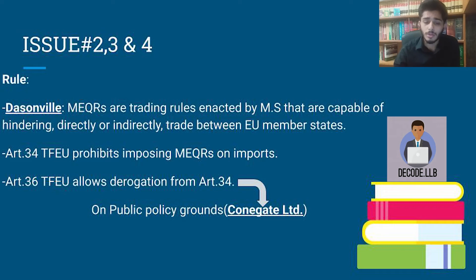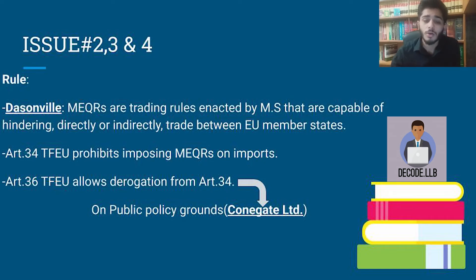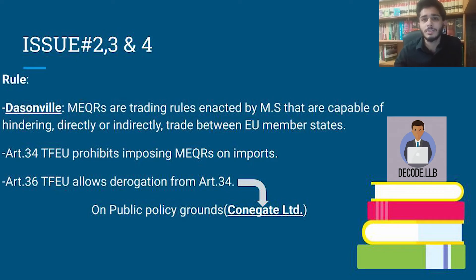The applicable ground from Article 36 here is the public policy ground, and an example of the adoption of the public policy ground can be seen from the case law Conegate Limited. Using these laws you will write that the Bulgarian measure is an MEQR as it is hindering directly the trade between European Union member states.